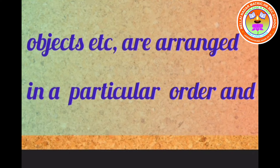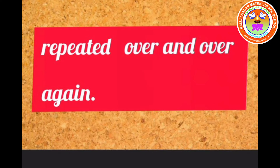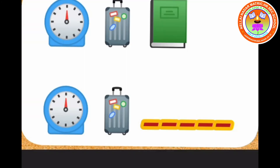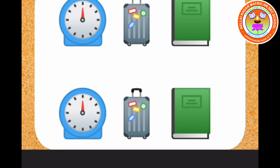For example: square, circle, rectangle, triangle — and then repeated again. Next example: wall clock, suitcase, book, wall clock, suitcase — children, what will come next? Book! Okay, children.